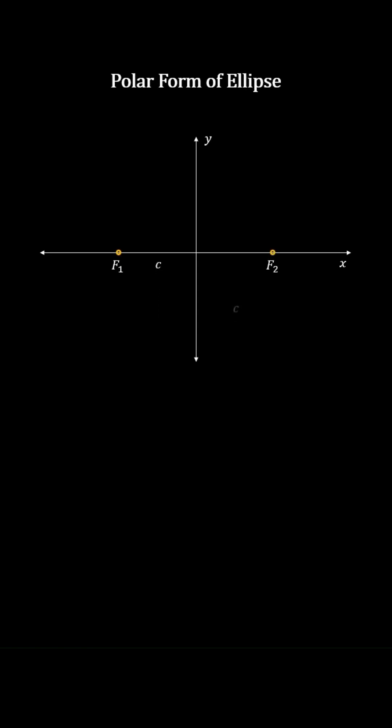The eccentricity of an ellipse is E equals C over A, and by the elliptic equation, the distance from the focus F1 to the point AP, Q on the ellipse is R1 equals A plus EP.